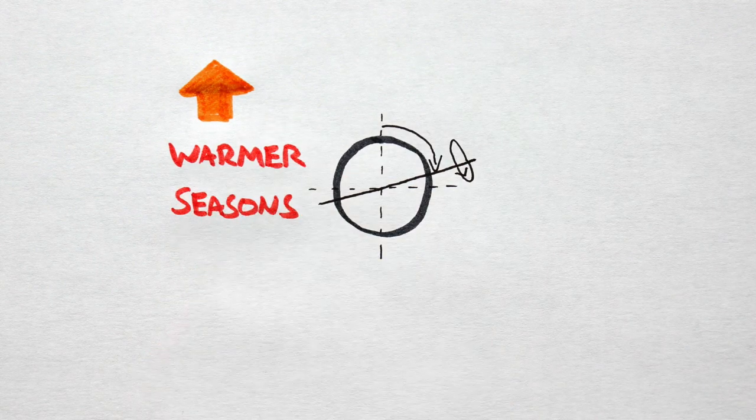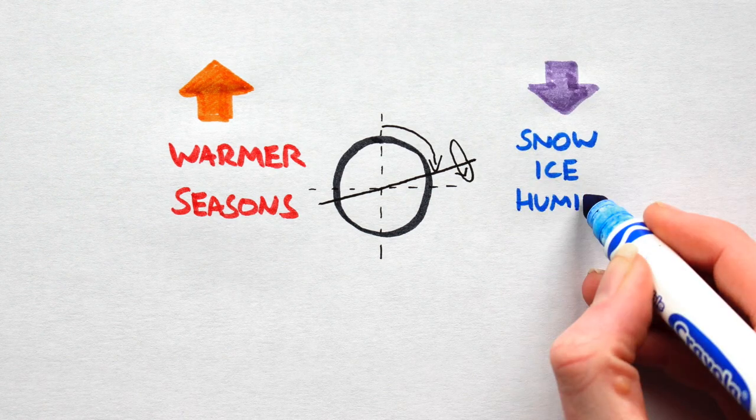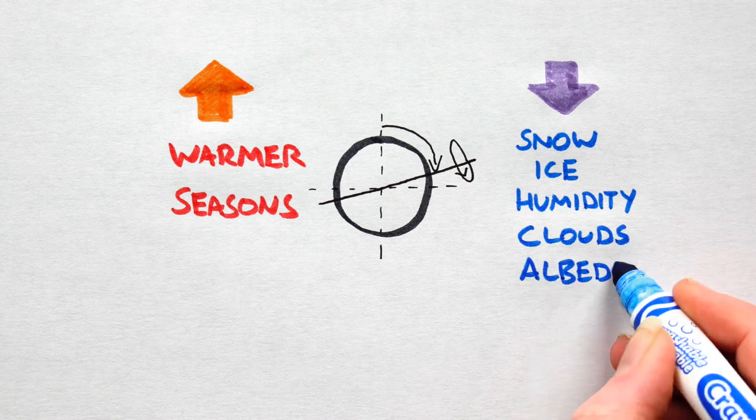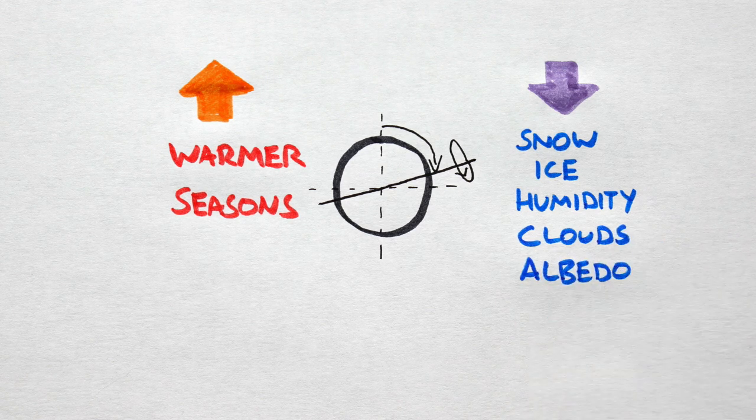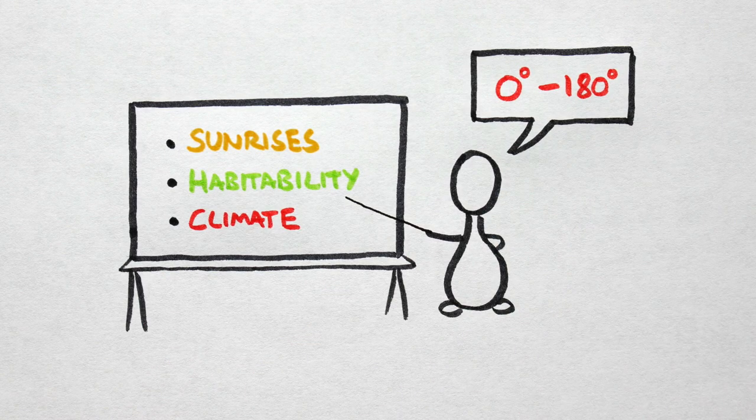High tilt worlds have less permanent snow and ice cover, less humidity, resulting in less cloud cover, and decreased albedo. I.e. high tilt worlds are better absorbers of light than reflectors. So consider these three parameters and choose an axial tilt that meets your requirements.